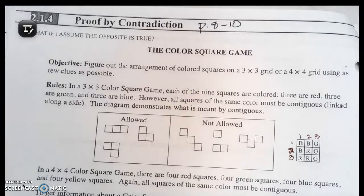There's something called the Color Square Game. The objective is to figure out the arrangement of colored squares on a 3x3 grid or a 4x4 grid using as few clues as possible. In a 3x3 color square game, each of the 9 squares are colored either red, green, or blue.